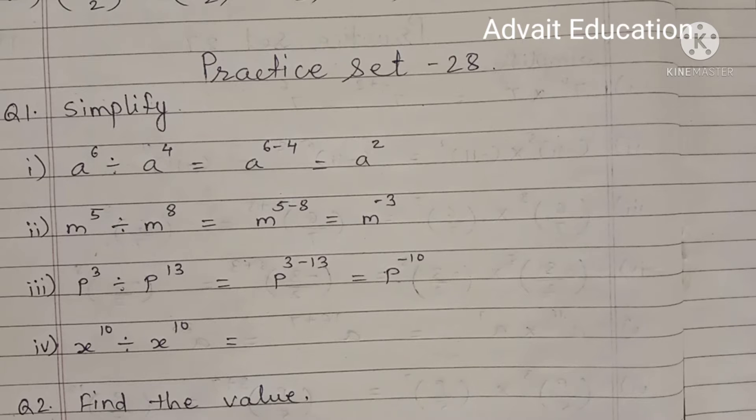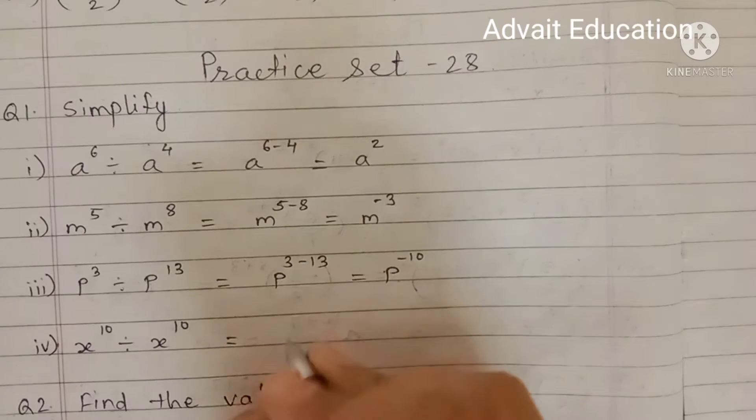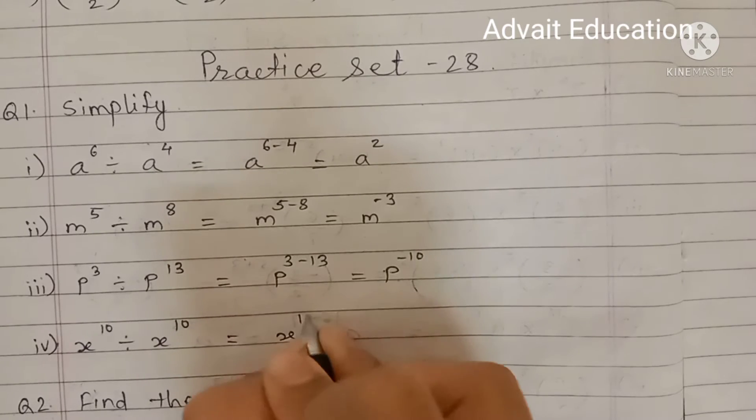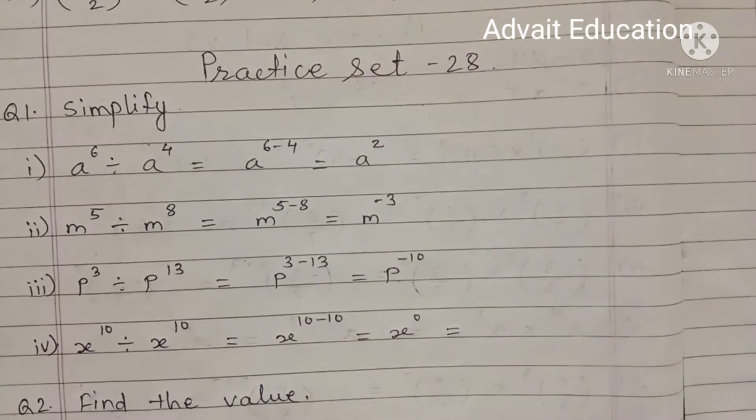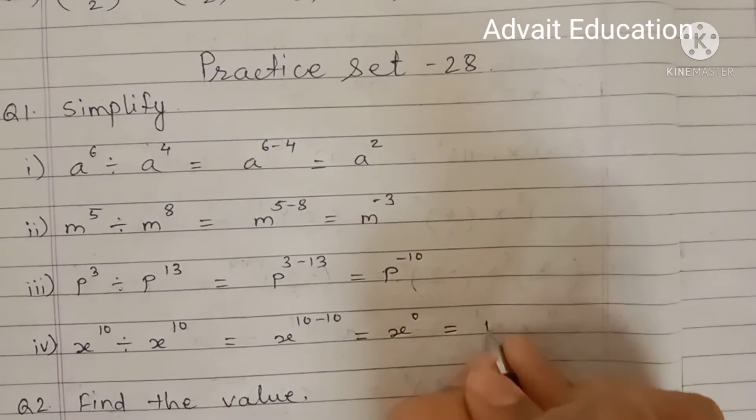Next, X raised to 10 divided by X raised to 10. Means X raised to 10 minus 10. Means X raised to 0. Anything raised to 0 is equal to 1.